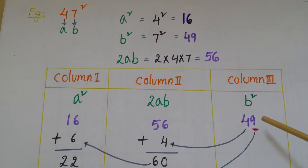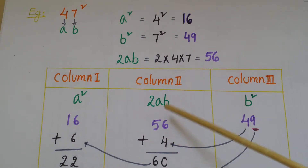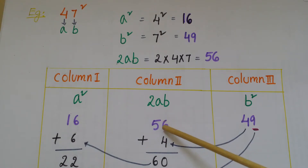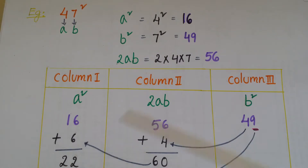Start with Column 3 — underline the units digit, which is 9, and carry over the remaining part (4) to Column 2. Add this to the Column 2 value: 56 + 4 = 60. Then underline the units digit 0 and carry over 6 to Column 1. Add 6 to 16: 16 + 6 = 22. Underline the whole value 22.